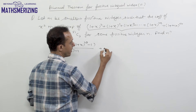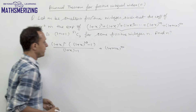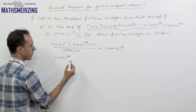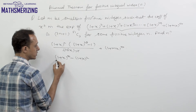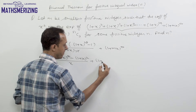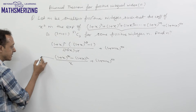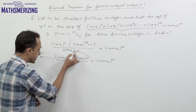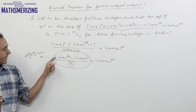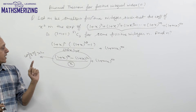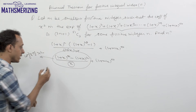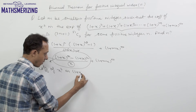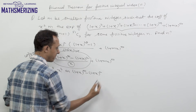Simplifying, this becomes [(1+x)^50 - (1+x)²] / x, plus (1+mx)^50. From this expression, since there's an x in the denominator, to find the coefficient of x², I need to find the coefficient of x³ in the numerator: (1+x)^50 minus (1+x)².